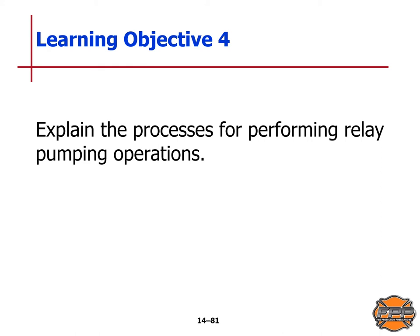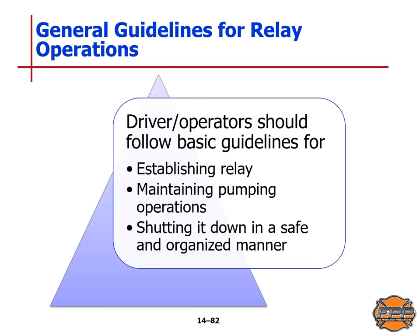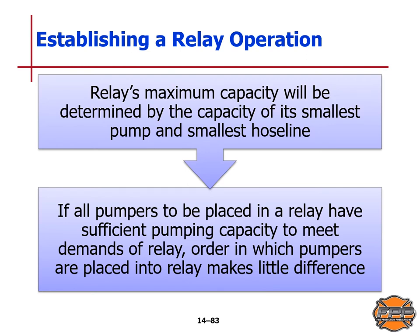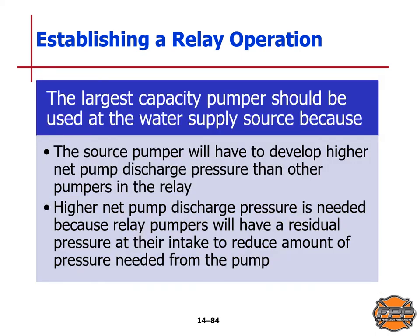Learning Objective 4: we will explain the processes for performing relay pumping operations. General guidelines for relay operations — driver operators should follow basic guidelines for establishing a relay, maintaining pumping operations, and shutting it down in a safe and organized fashion. The relay's maximum capacity will be determined by the capacity of its smallest pump and smallest hose line. If all pumpers are placed in relay and have sufficient pumping capacity to meet the demands of the relay, the order in which they are placed into relay makes little difference. The largest capacity pumpers should be used at the water supply source because the source pumper will have to develop a higher net pump discharge pressure than the others.